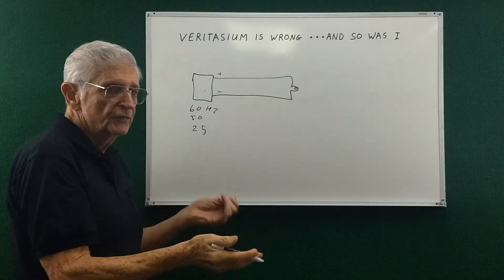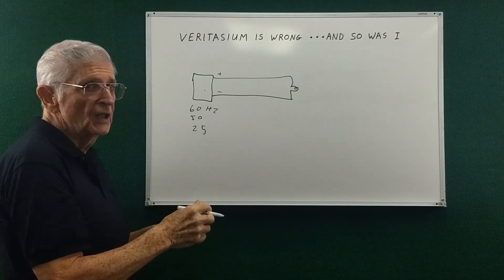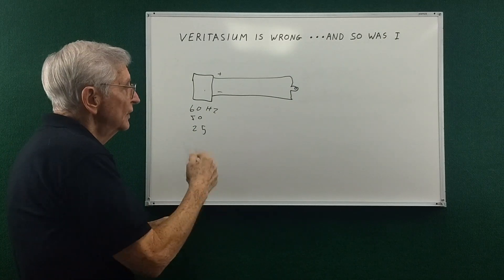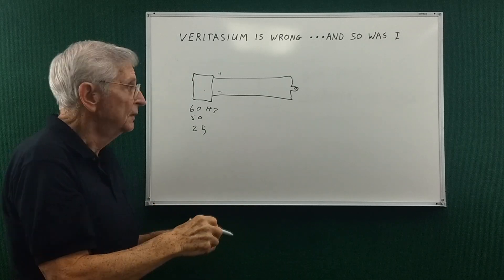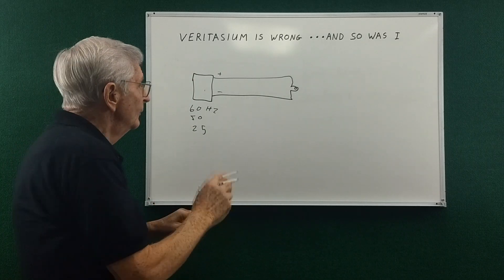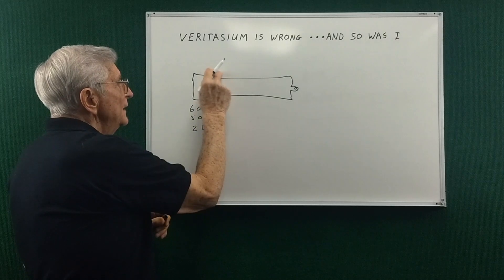after the fields are established, they no longer change. So there's an initial transient and then a steady state condition. But once we're back to AC,